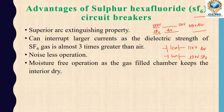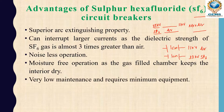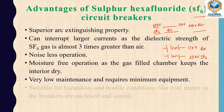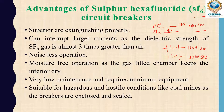Moisture-free operation: as the gas-filled chamber keeps the interior dry, there will be no moisture. The chamber is fully sealed and kept dry. Another advantage is very low maintenance - after installing the SF6 circuit breaker it requires very little maintenance and minimum equipment.